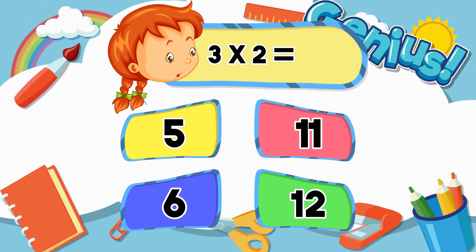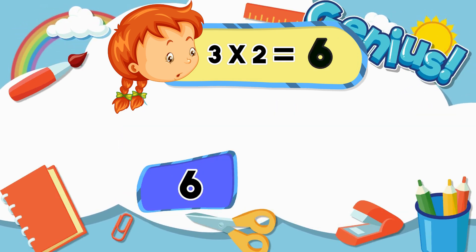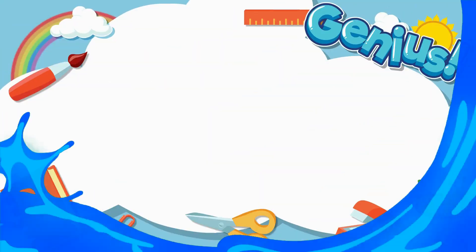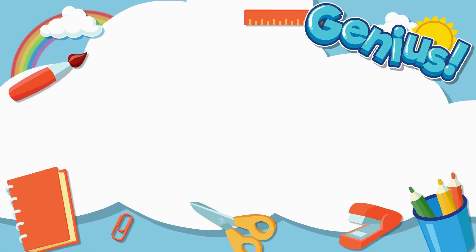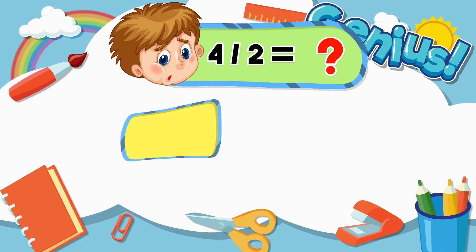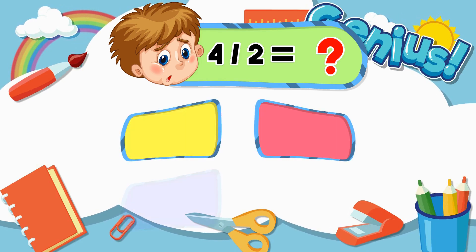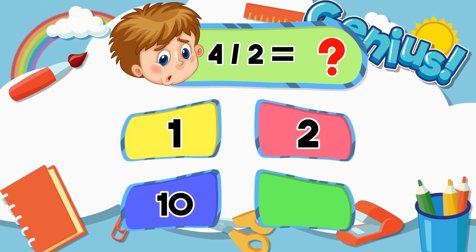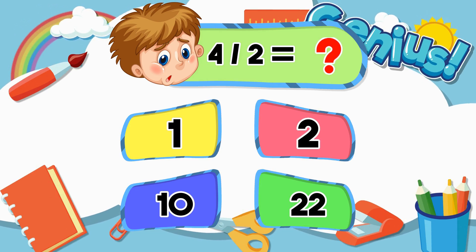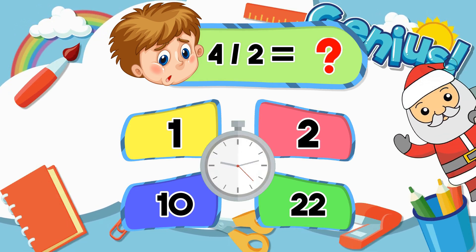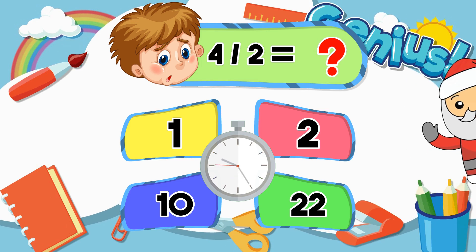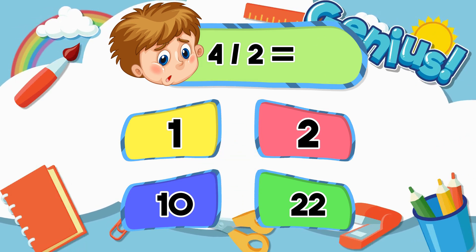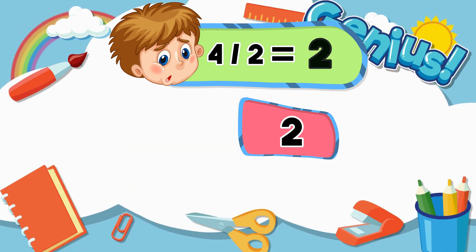Twenty. Six. Five. Eleven. Six. Divided by two. 1, 2, 10. 22. 2.